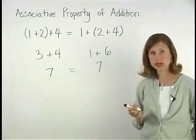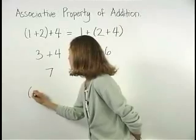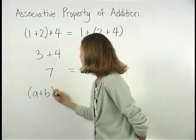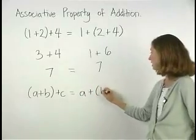A more general way to write the associative property of addition is as (a+b)+c is equal to a+(b+c).